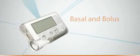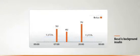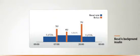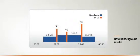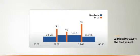The Paradigm Veo can administer both basal and bolus insulin, but what's the difference? Basal is pumped continuously to cover your insulin needs between meals and at night. You can even set multiple basal rates to accommodate your lifestyle, or adjust basal rates temporarily, depending on your activity levels. Bolus insulin covers your mealtime insulin needs, and can also help you to lower elevated blood glucose.